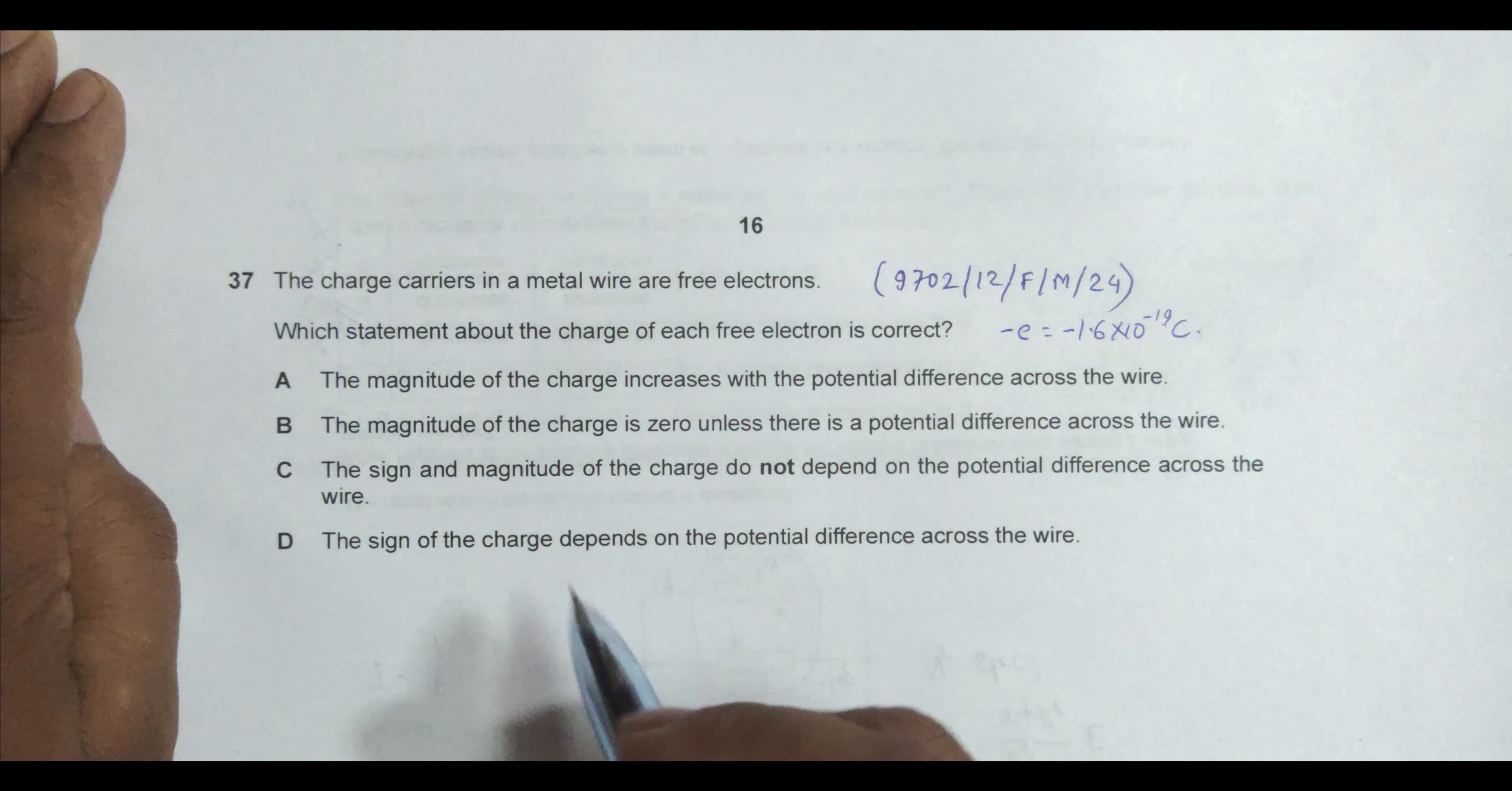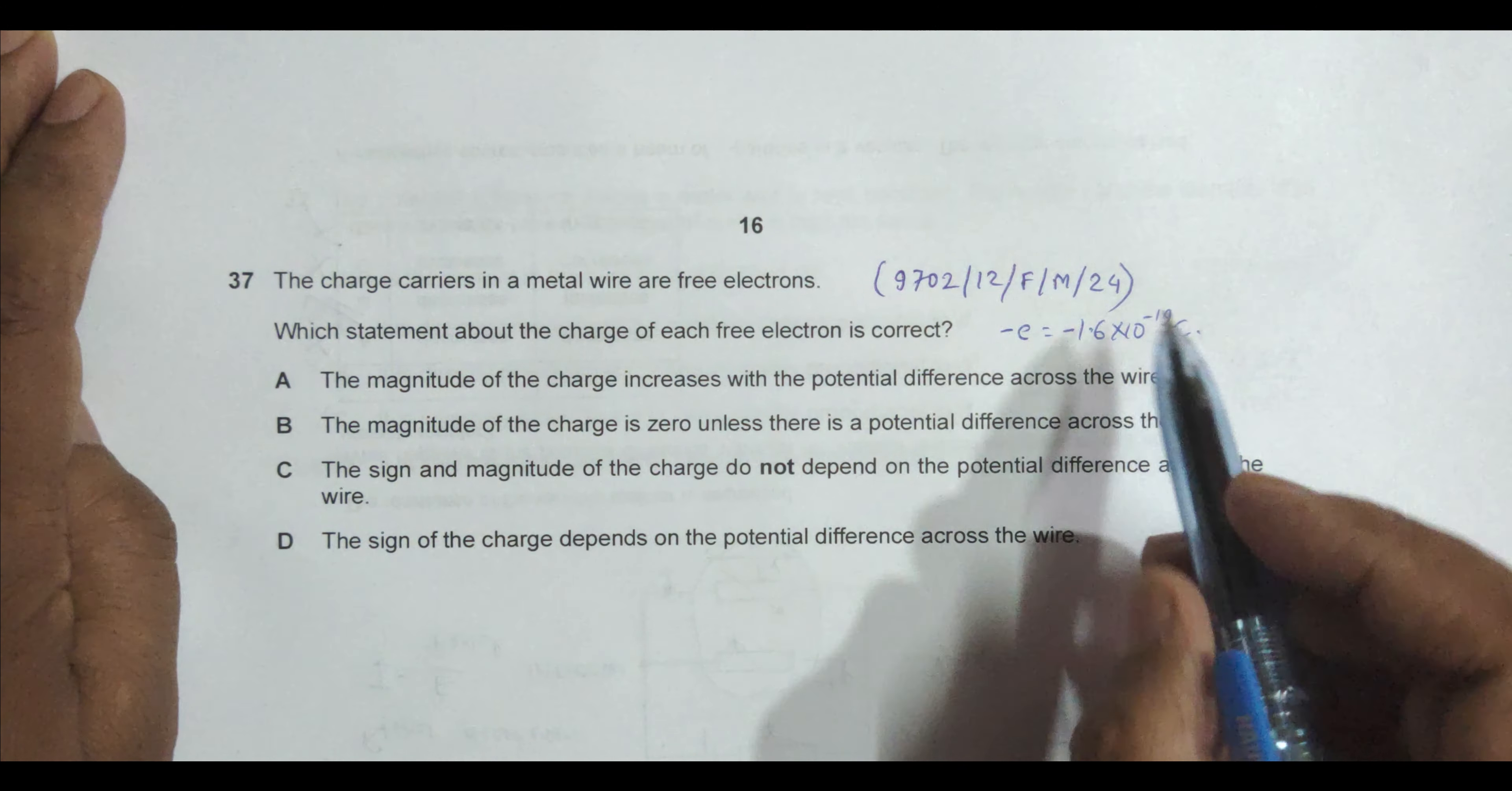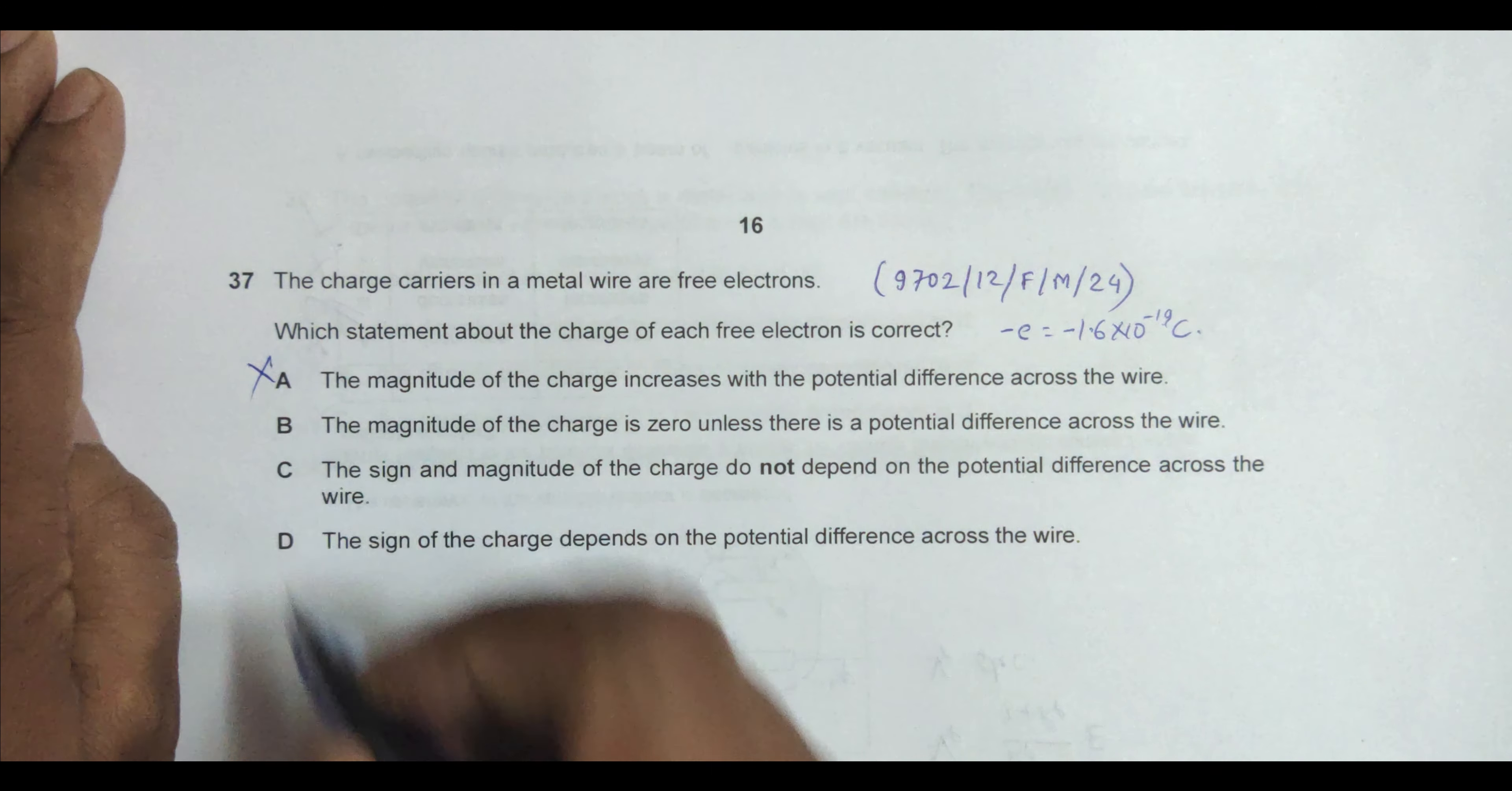Now it says the magnitude of the charge increases with the potential difference across the wire. No, because it should be this much. Whether the PD increases or decreases, so incorrect.